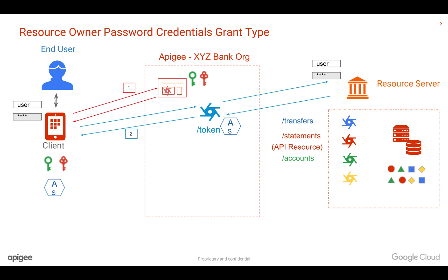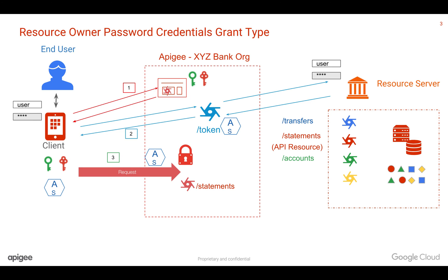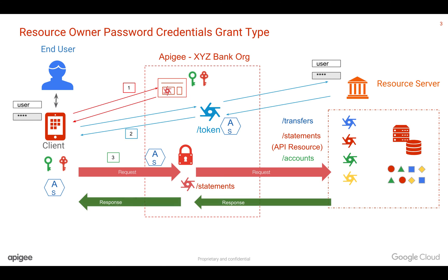The token is sent back to the client. The client now has a token and uses it to make an API call to a particular API — like "get me account statements." Apigee verifies the token as well as the scopes associated with the token, and allows access to the backend API. The backend returns the response, which is sent back to the client.